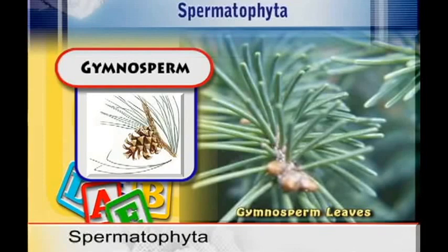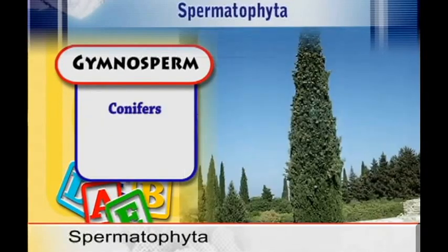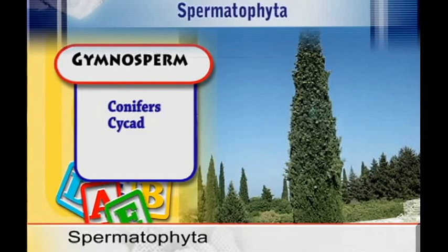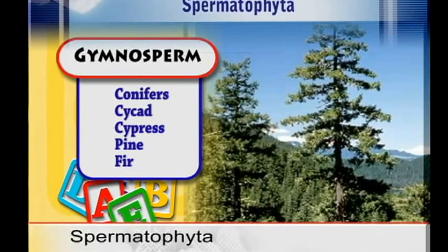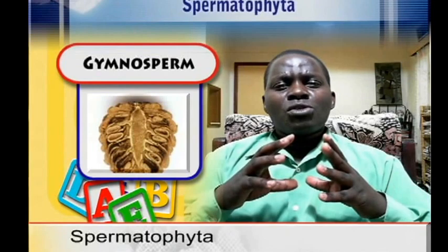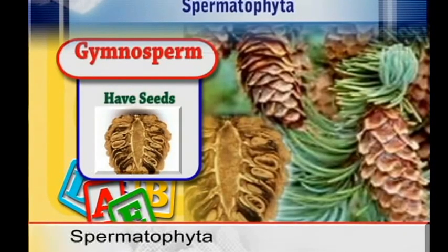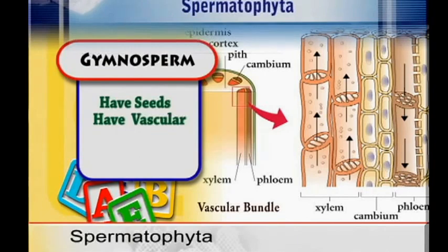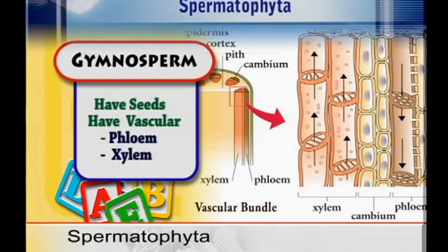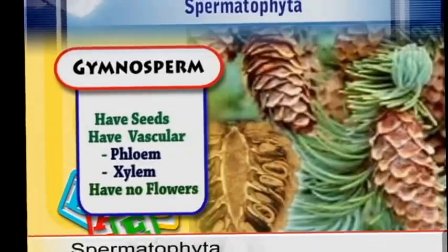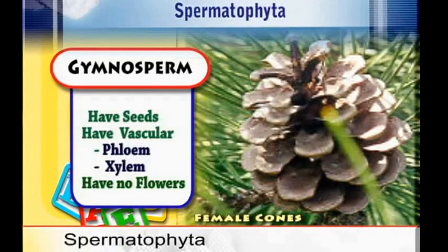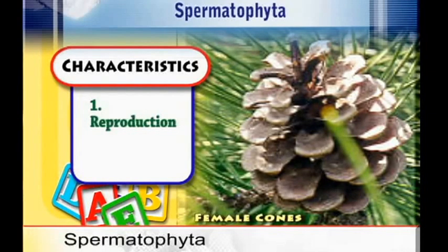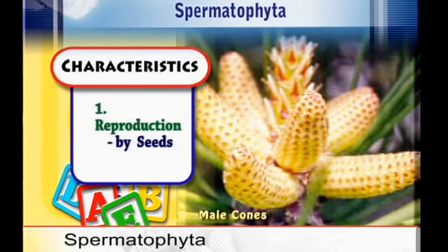Gymnosperms is mainly made up of conifers, cycad plants, cypresses, pine, and many others. These ones have seeds and they have the vascular system — the phloem and the xylem — but they do not have flowers, despite the fact that they have seeds. Their reproduction is by seeds, but they do not have flowers.